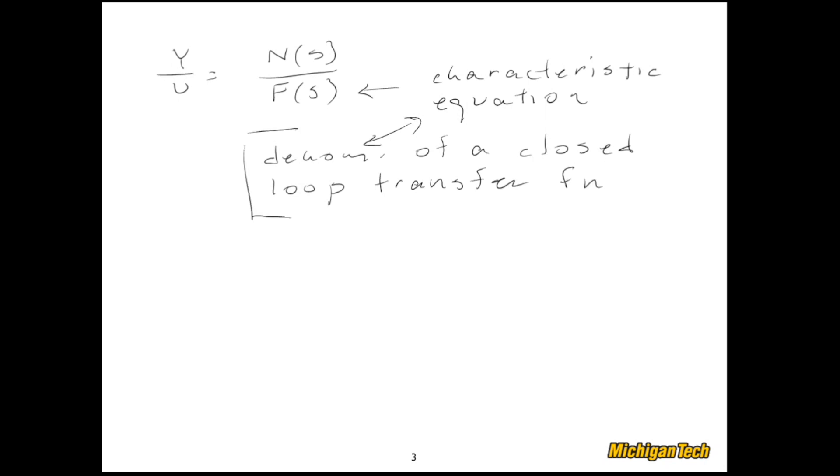So the denominator of some closed loop transfer function. For a system to be BIBO stable, what has to happen is all the roots of that characteristic equation have to be in the left half plane. So notice I'm not including the imaginary axis here. So if all the roots of the characteristic equation, all the poles—because that's the same thing, the poles of a transfer function are the roots of the characteristic equation—if all those poles are in the left half plane, then the system is BIBO stable.